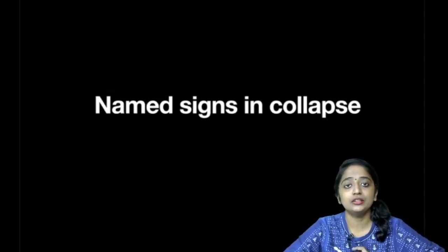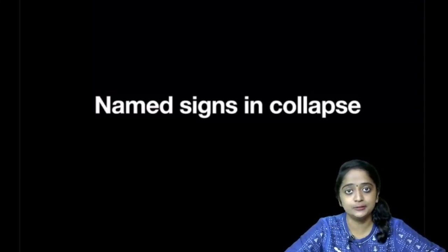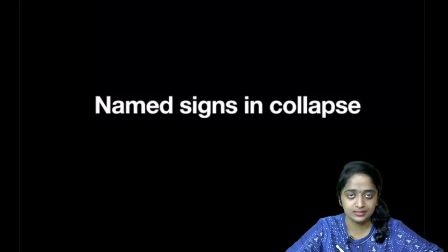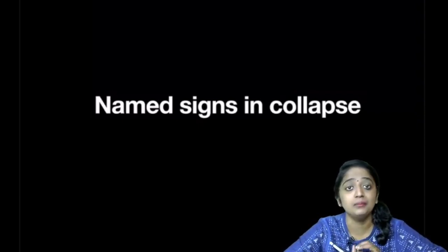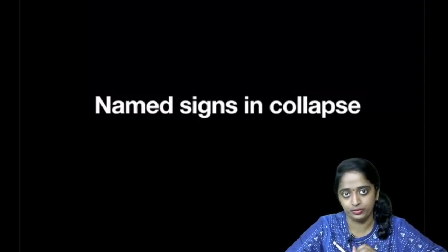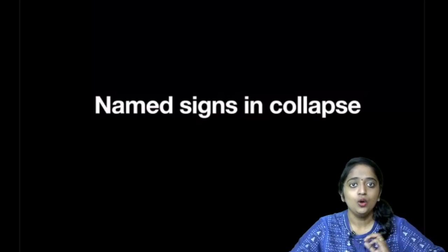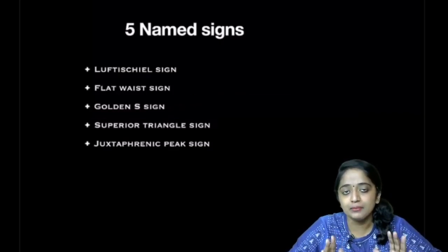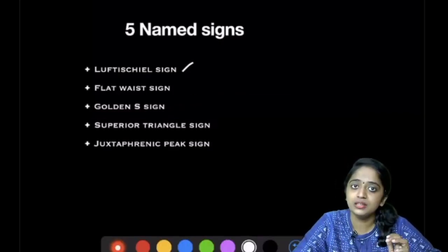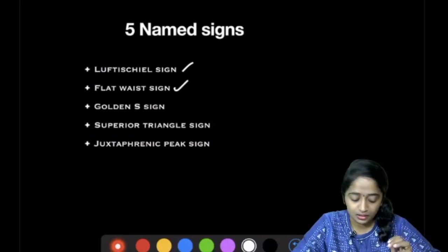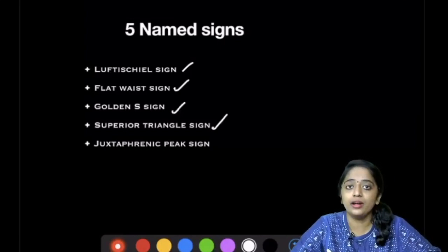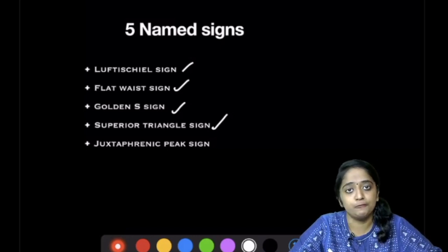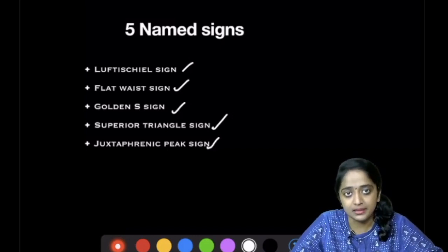Hello friends, welcome back to Module 6 of the Collapse in Chest Imaging series. In this final module, we shall discuss the named signs of collapse in chest radiograph. We'll be discussing five named signs: the Luftsichel sign, the flat waist sign, the Golden S sign, the superior triangle sign, and finally the juxtaphrenic peak sign.